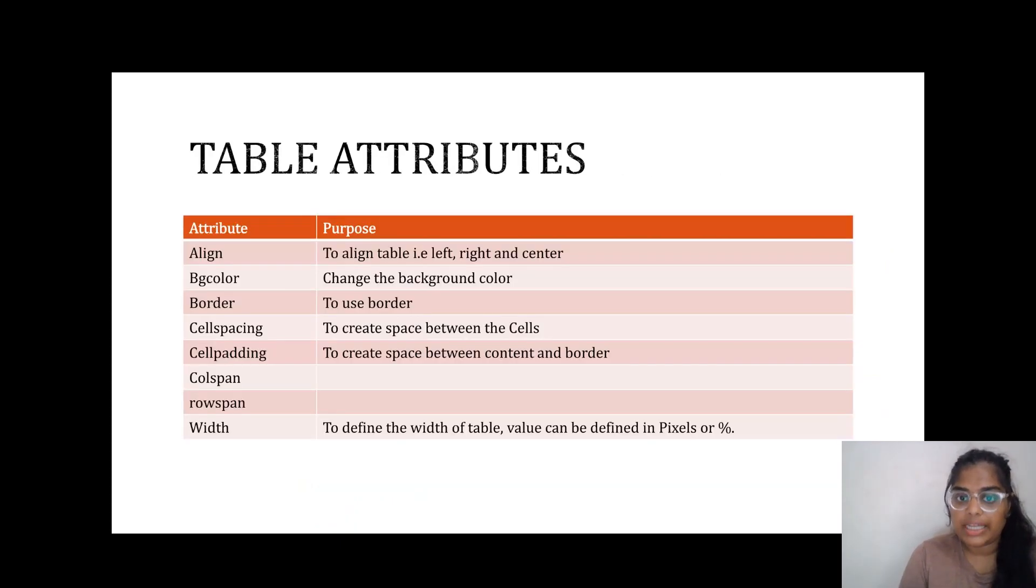Next, table attributes. For the table, we can add attributes also. Align - we can align the table to the left, right, or center. We can even change the background color and give a border.